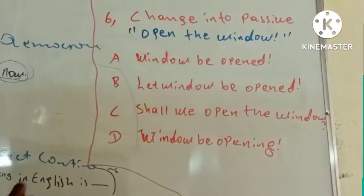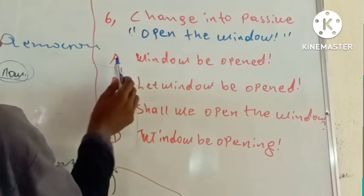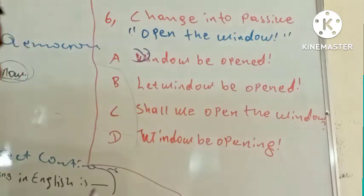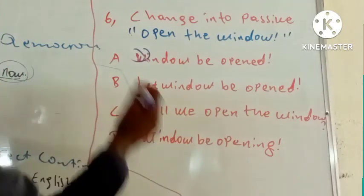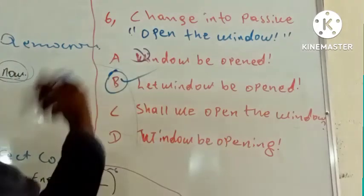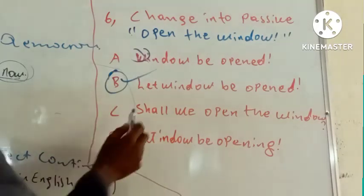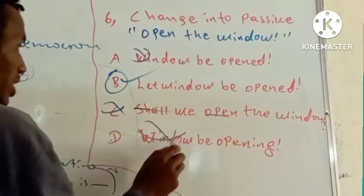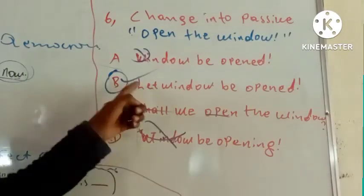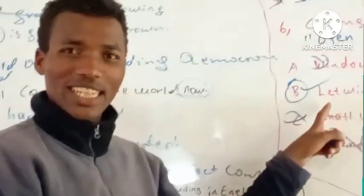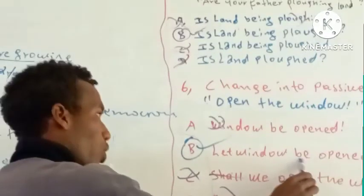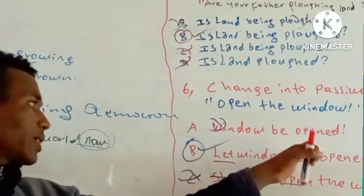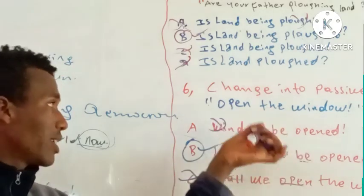Option C) 'Shall we window?' — this is not possible for a command; 'shall' is not necessary here. 'Let' is the correct word. So 'Let window be opened' is the correct answer for the passive form of a command.